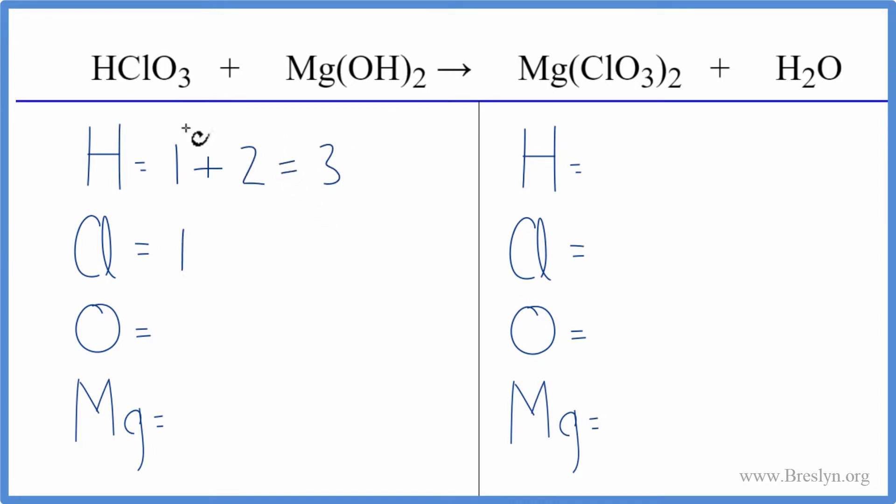One chlorine, three oxygens, plus this two applies to everything in parentheses. We have two times the one oxygen, so we have three plus the two, five oxygen atoms, and then one Mg.